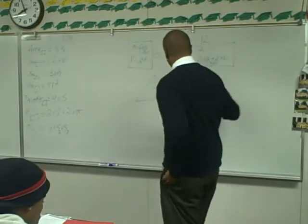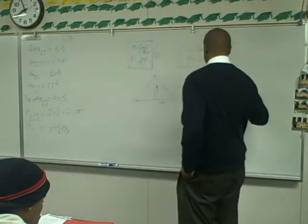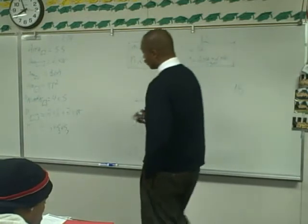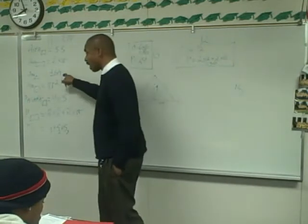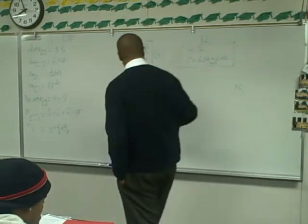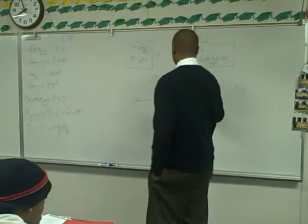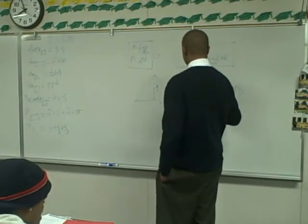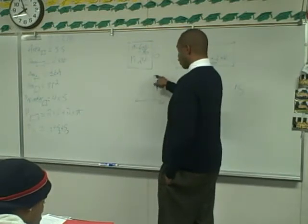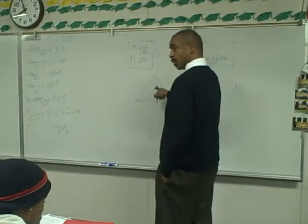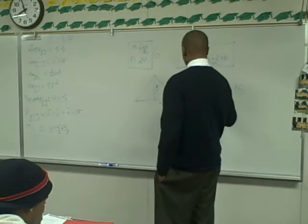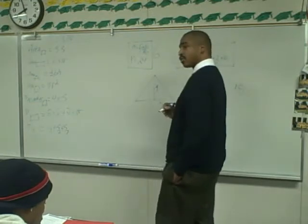So we had an answer of 18. Let's test it out. The area of a triangle is one half of the base times the height. We know the height of this triangle is 9. But what is the base of this triangle?